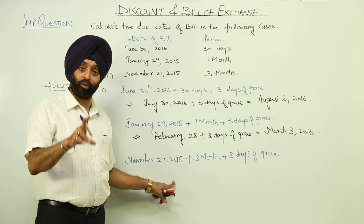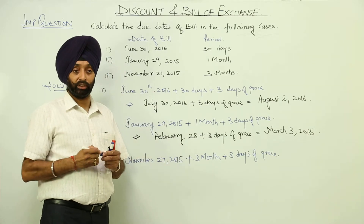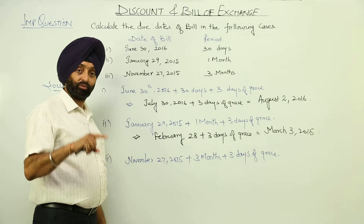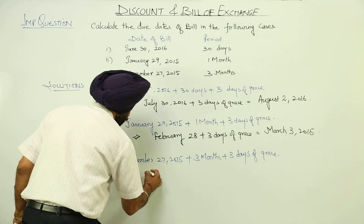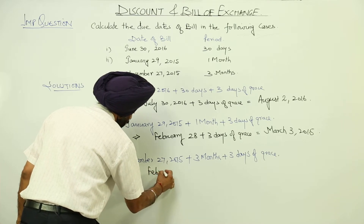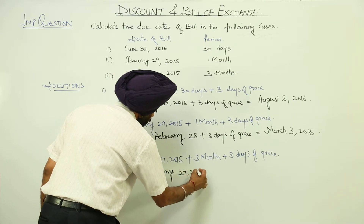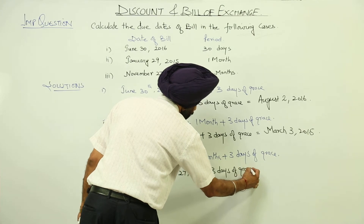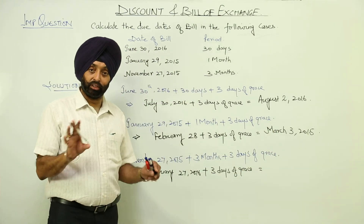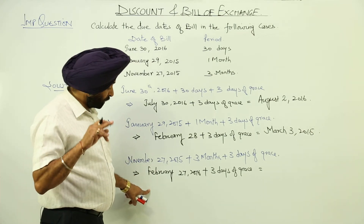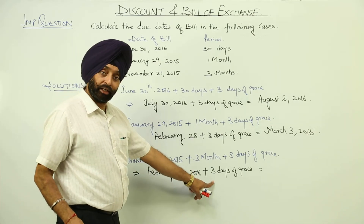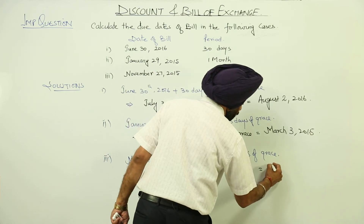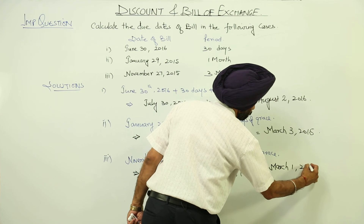Now 2015 is not a leap year, but 2016 is a leap year, so be aware about the leap year. November 27th plus 3 months: December 27th, January 27th, and February 27th. So we are having February 27th, 2016, plus 3 days of grace. February 2016 has 29 days, so we have 3 days extra: February 28th, February 29th, and 1st March. So this will be March 1, 2016.